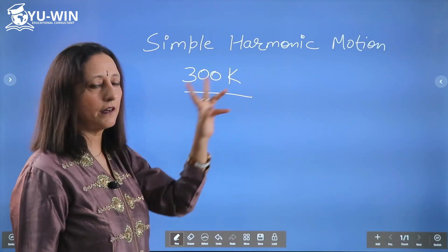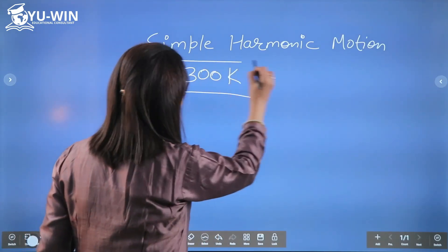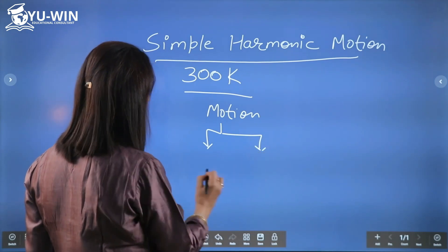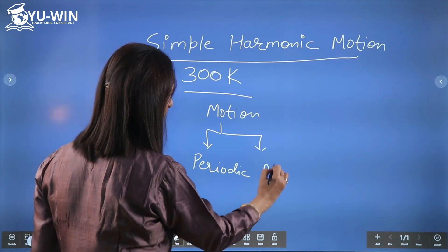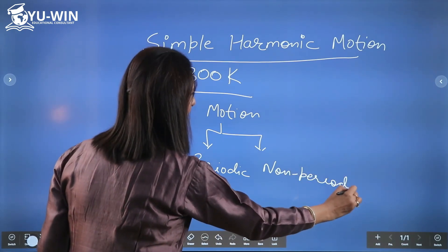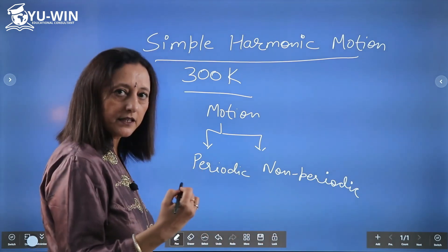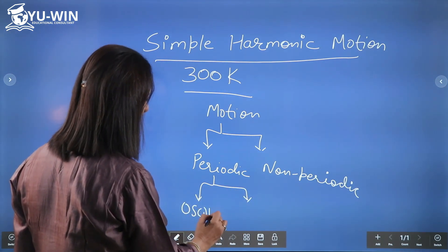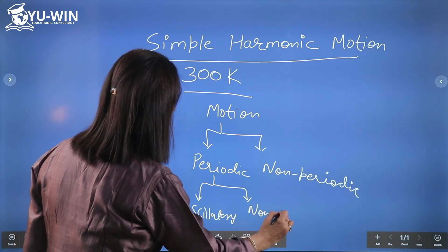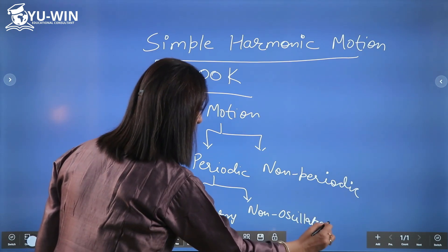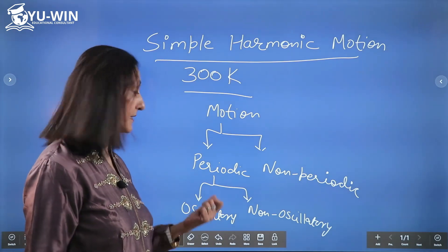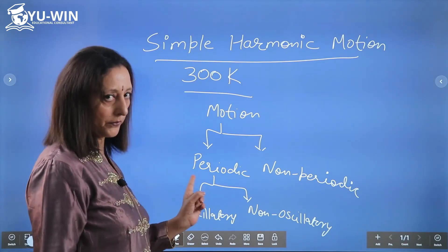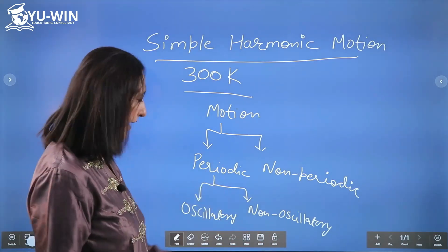What is the basic requirement for simple harmonic motion? I can categorize motion into two categories: periodic motion and non-periodic motion. Periodic motion — we all know — includes the motion of the Earth round the sun, swings, planets. Periodic motion can be further of two types: oscillatory motion, like that of a swing or pendulum, or non-oscillatory, like the motion of Earth round the sun, which is periodic but not oscillatory. All oscillatory motions are periodic, but all periodic motions are not oscillatory.